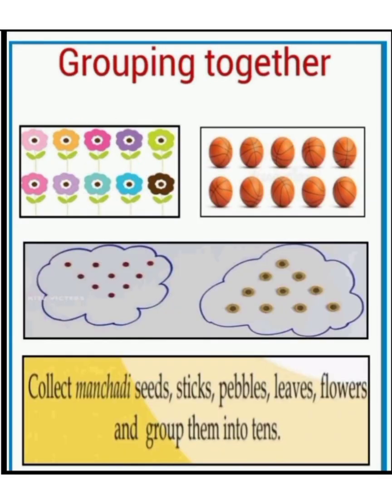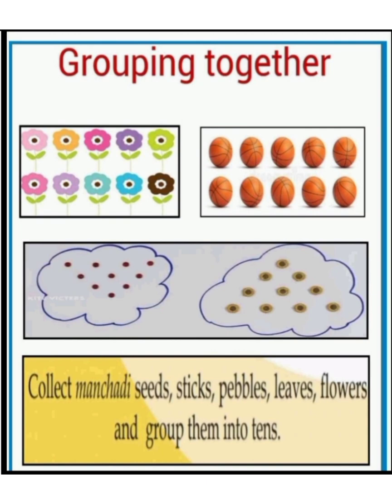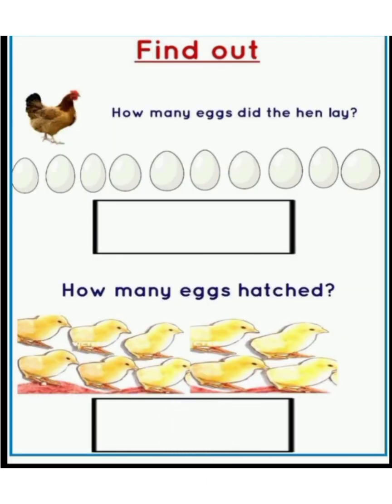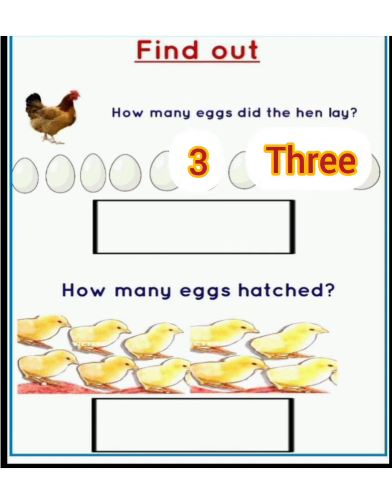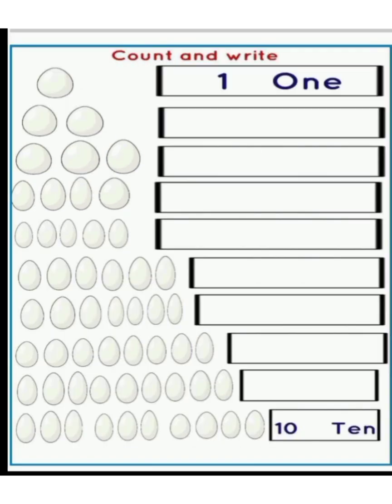Group them together — collect Manchati seeds, sticks, pebbles, leaves, and flowers and group them into tens. Next, find out how many eggs the hen laid. There are ten eggs and all ten eggs hatched out.